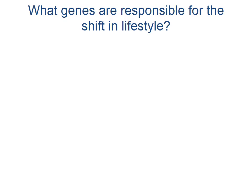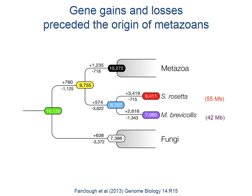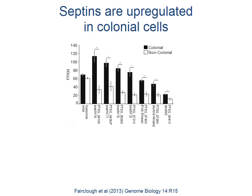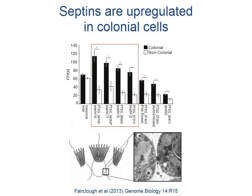Sequencing of the Salpingoeca rosetta genome reveals a comparable genome size and gene number to Monosiga brevicollis, supporting the idea that many gene gains and losses preceded the origin of metazoans. Transcriptome sequencing of various life cycle stages of Salpingoeca rosetta revealed that septins — genes that regulate cytokinesis in metazoans and fungi — are upregulated in colonial cells. Septins appear responsible for maintaining the narrow intercellular bridges, likely formed through incomplete cytokinesis, that connect neighboring cells in Salpingoeca rosetta colonies.